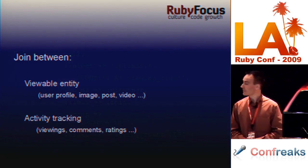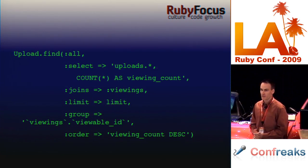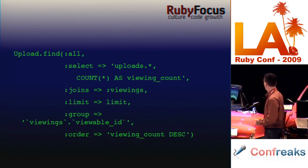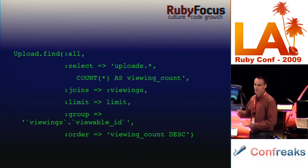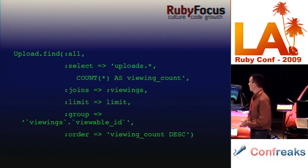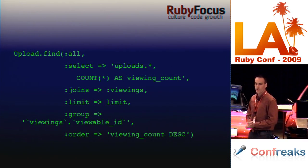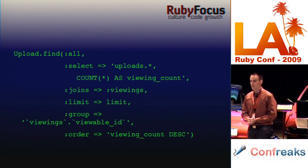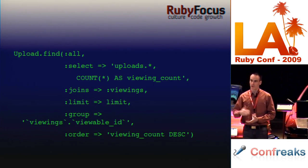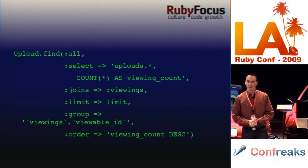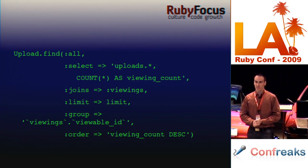Here's an example query. Upload is the thing you're viewing, and you're joining it on the viewings table. It calculates the number of rows of the viewings table that refer back to this upload. Then you can order by that, and you group it by the viewable ID. SQL will return a list of uploads ordered by the most popular one — hence the name.